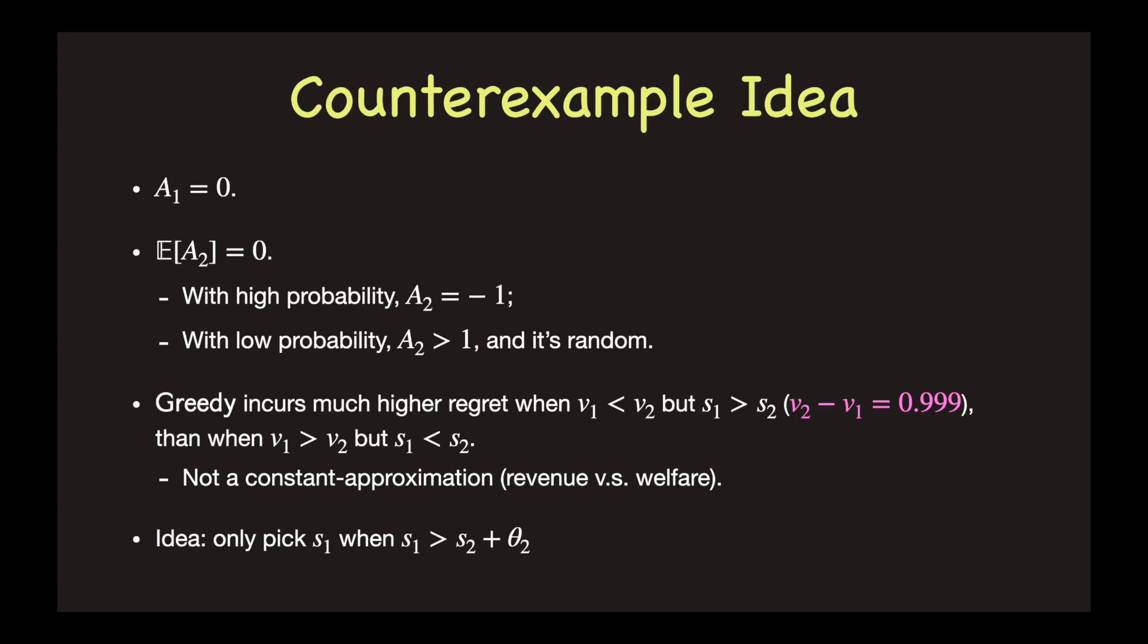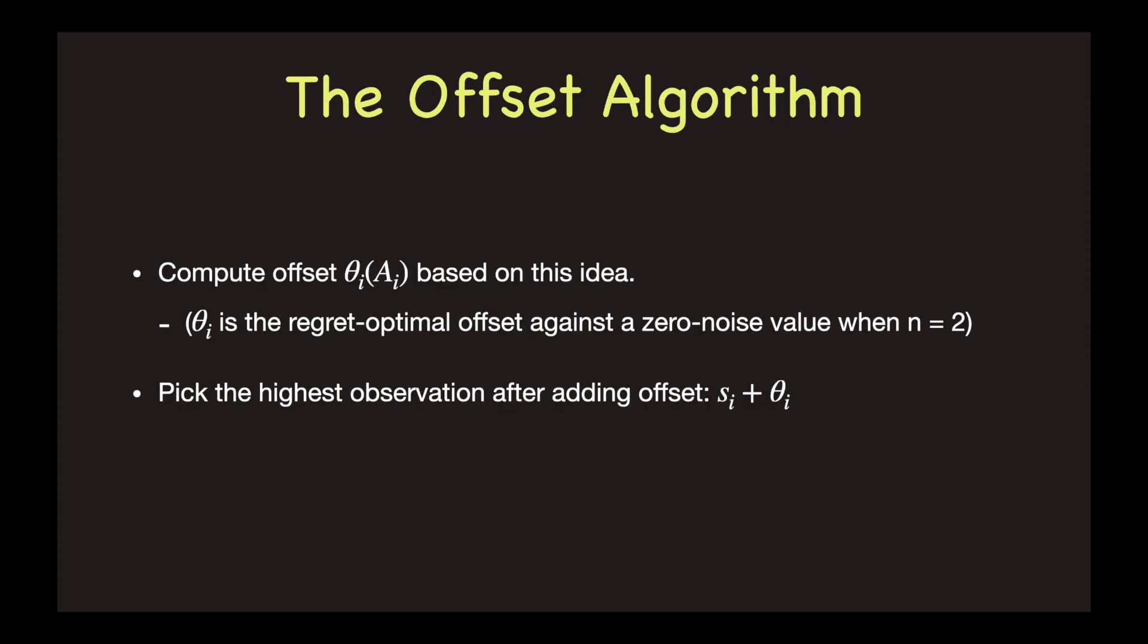This motivates us to consider a modified algorithm, which is to pick the first value when the first observation is larger than the second by a margin. In general, we can compute an offset theta i using this idea. The algorithm is to pick the highest observation after adding its offset.